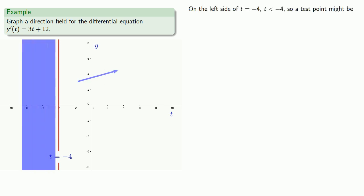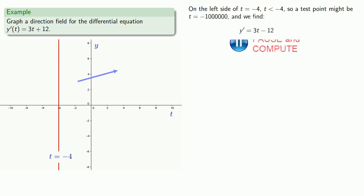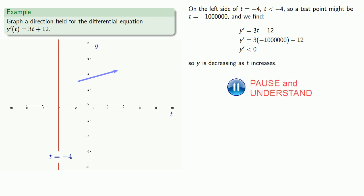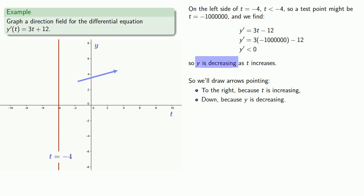And similarly, on the left side of t equals negative 4, t is less than negative 4, so a test point might be t equals minus 1 million, and we find y prime is negative, so y is decreasing as t increases. So in our direction field, we'll draw arrows pointing to the right because our independent variable t is increasing, but down because y is decreasing. So we'll draw an arrow pointing to the lower right.